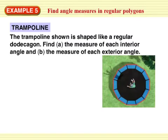Okay, another example. The trampoline shown is shaped like a regular dodecagon. Find the measure of each interior angle and the measure of each exterior angle. If you remember, regular means all the angles measure equally. And the sides are actually equal, too. They're congruent. So, dodecagon. What is a dodecagon? Let's see, 12. Dodecagon is 12.